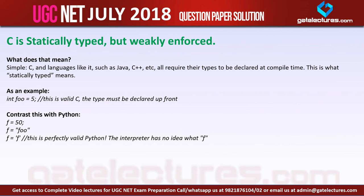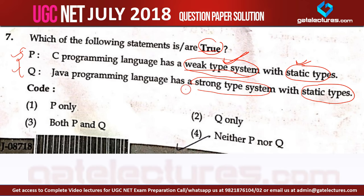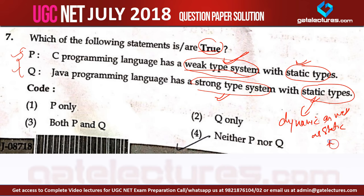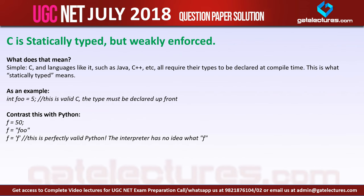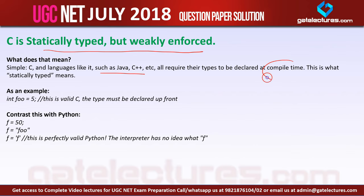C is statically typed but weakly enforced. Languages such as C, Java, and C++ all require their types to be declared at compile time — this is what we call statically typed. For example, if I say 'integer foo = 5', the type of that variable will be checked at compile time. In Python, however, you don't even need to give the type of the variable.